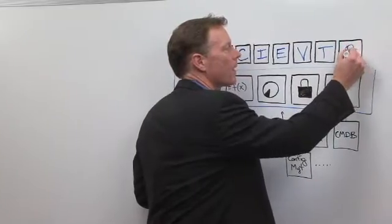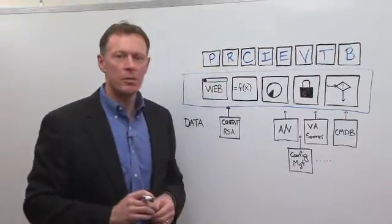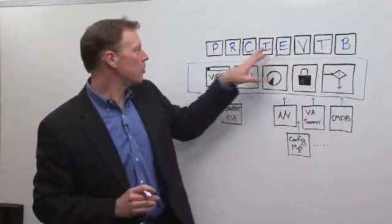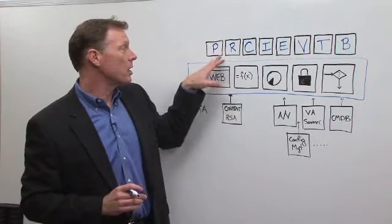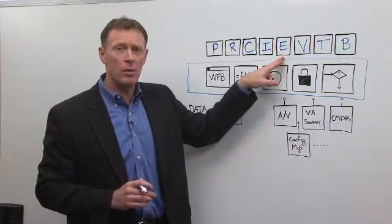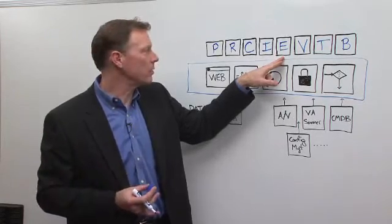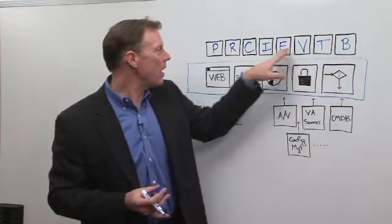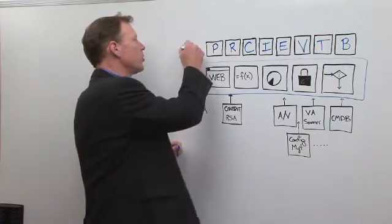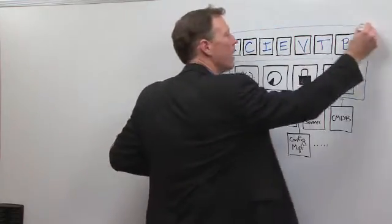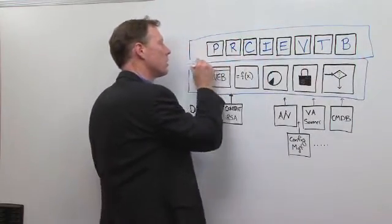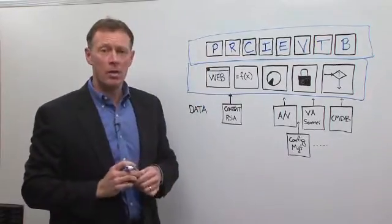And then, finally, business continuity management. Again, related to risks and related to policies, but ultimately related to your enterprise assets and what you care about within your enterprise. So, these are the applications, we call them modules, that come out of the box with Archer.